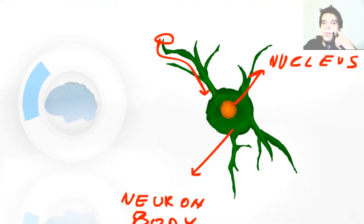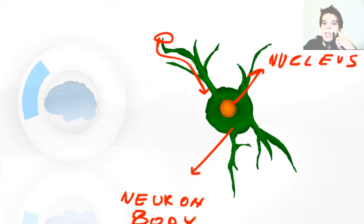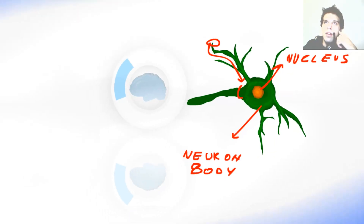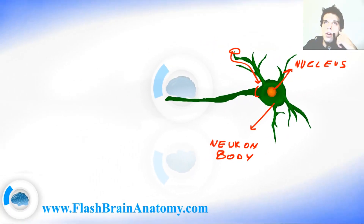Another protoplasm extension, an axon, starts here with a thick origin. Then it gets thinner and continues on with approximately the same radius till its end.